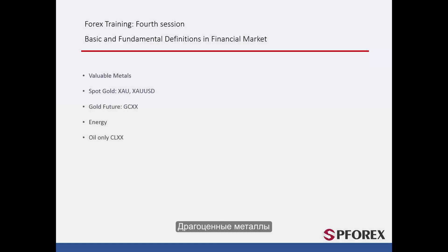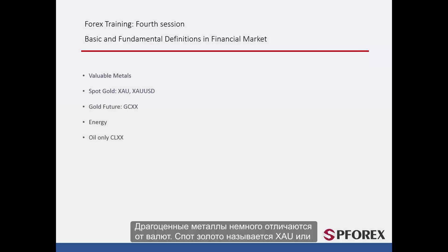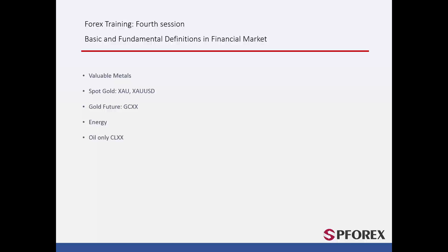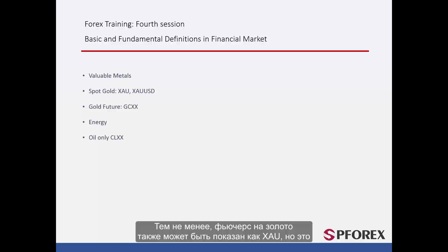Precious metals are a bit different. Spot gold is referred to as XAU, or XAU USD against the US Dollar. Future gold is termed GCXX. However, future gold may also be shown as XAU, but it will be in its own future gold section on the MetaTrader website.